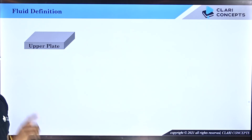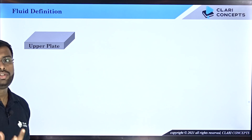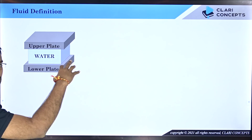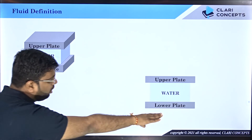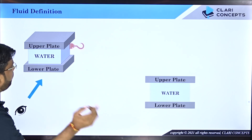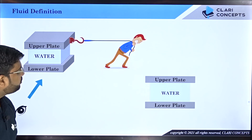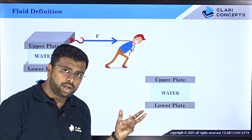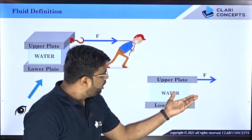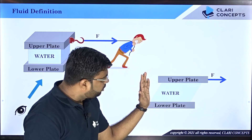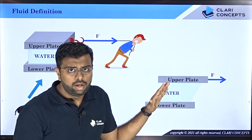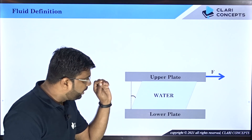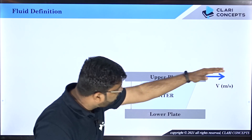Now let's perform the same experiment but with a fluid — say water — between the two plates. Looking from the front, I have the lower plate, upper plate, and water in between. If I pull the upper plate with force F, do you think water will behave like rubber did? Can you imagine water coming to a stop at a particular deformation angle? I don't think so — you can't even imagine that happening.